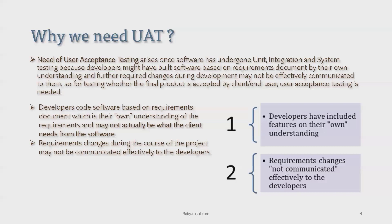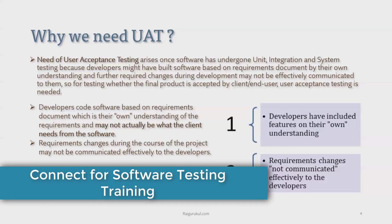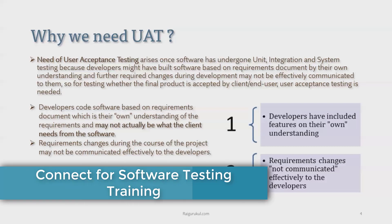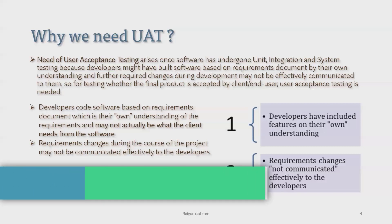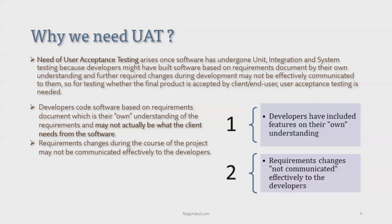For the second example, consider an e-commerce site where the client provided a requirement to build a payment page with credit card only. What if they missed specifying other payment options? This becomes a restriction — people who don't have a credit card won't be able to use the product. In that case, the UAT team will highlight this and based on that, the development team will make the necessary changes.